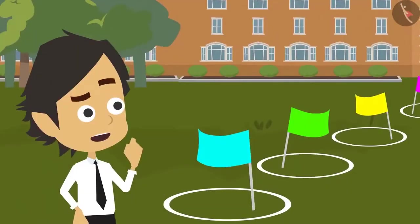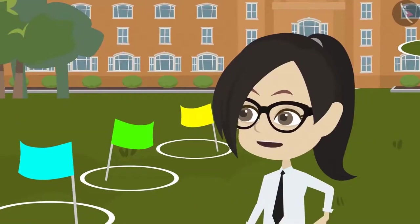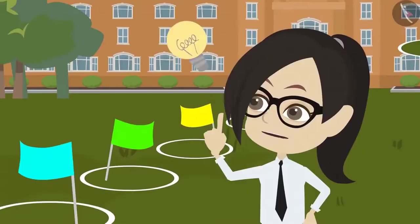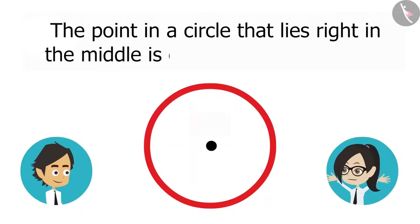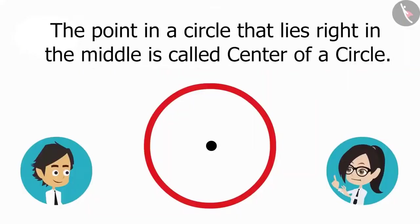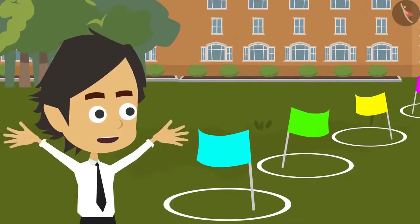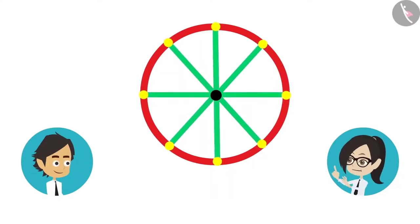Then what do we consider as the center of the circle? You don't have to assume the center — the center is already there. The point inside a circle that lies right in the middle is called the center of a circle. This means that the center is not just anywhere in the circle but right in the middle. And if we draw several lines from the center to different points on the boundary of the circle, then all those lines will be of the same length.